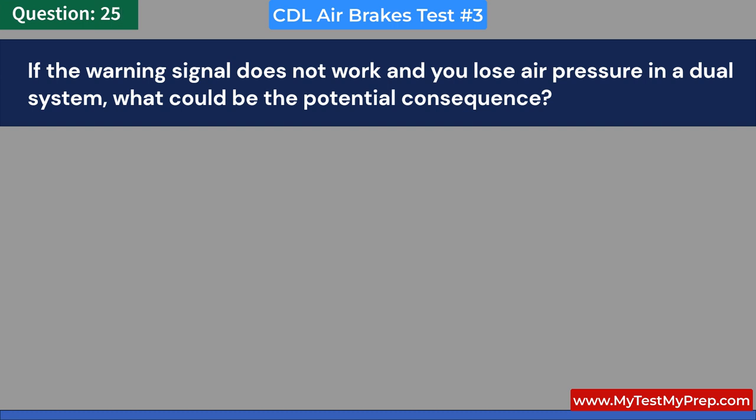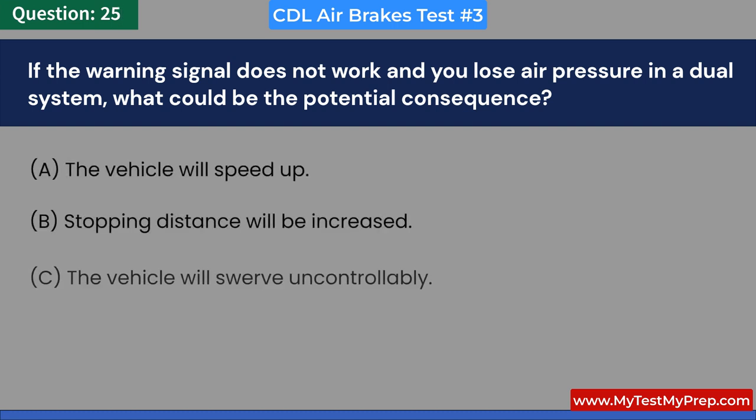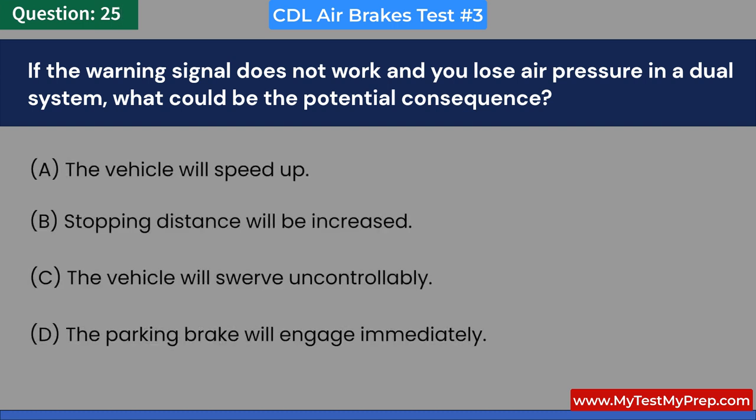If the warning signal does not work and you lose air pressure in a dual system, what could be the potential consequence? A. The vehicle will speed up. B. Stopping distance will be increased. C. The vehicle will swerve uncontrollably. D. The parking brake will engage immediately. Answer: B. Stopping distance will be increased.